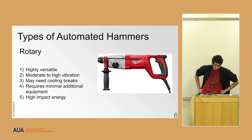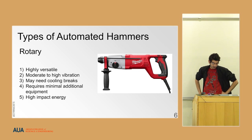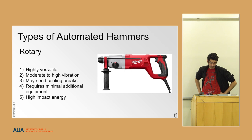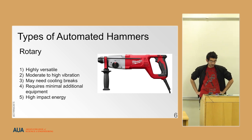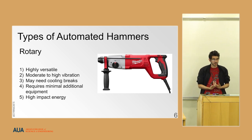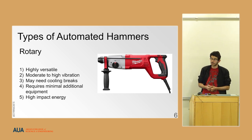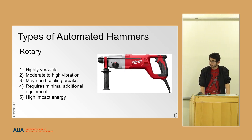We also have rotary hammers, which are highly versatile — they can be used for hammering, drilling, or other tasks. They have moderate to high vibration depending on the model and sometimes need cooling due to their construction. They require almost nothing but electricity and have high impact energy. I chose electric hammers because they don't need any other equipment, they use only electricity, and they can be used in a vacuum — for example in a space where there is no air — making them safer.